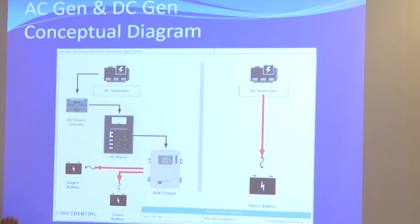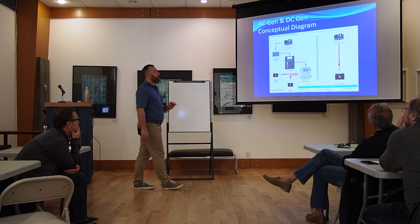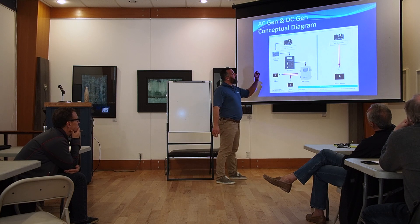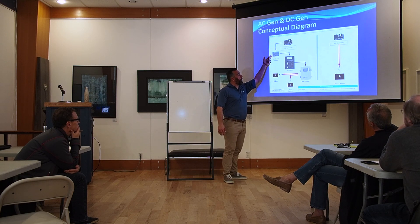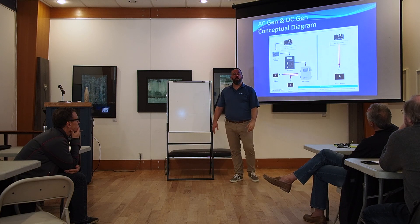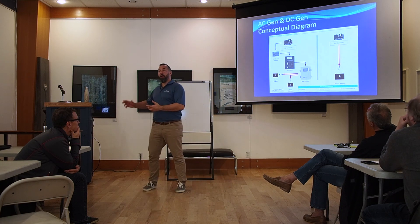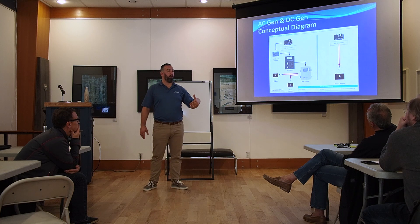AC generators will have alternators, but they are tiny — barely enough to keep the battery that started the generator running. There might be a 30 amp or 20 amp alternator. Your generator should have a dedicated battery. Most don't, but they should, and that battery gets its own charge from the generator's alternator. But the real purpose of an AC generator is to run AC loads. With an AC generator, you're basically creating AC — effectively replicating what shore power does — and you're recharging your batteries with a battery charger.